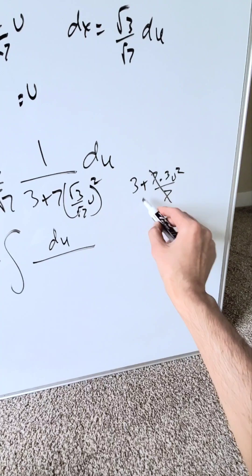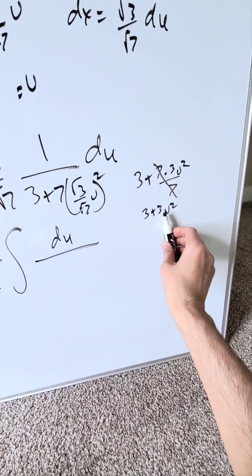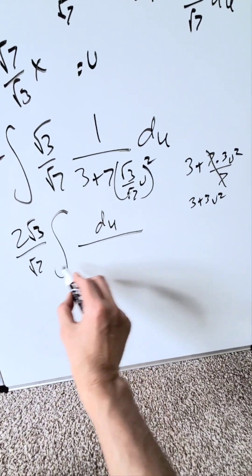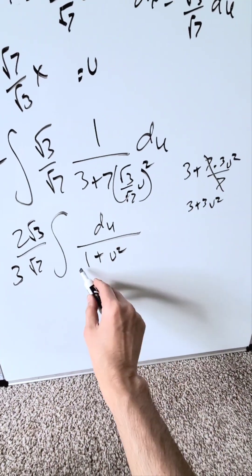The 7s will cancel out. I'll have over here a 3 plus 3u squared. I can isolate the 3 and push it out. I'm pushing out the 3 right over here. I'll have a 1 plus u squared. And this is it.